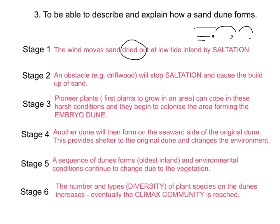Stage two: an obstacle such as driftwood, a can, or a rock stops saltation, causing materials to build up into a small mound of sand. Stage three: pioneer plants — the first plants to grow in any area — begin to colonise. They cope with harsh conditions: salty, windy, and with very little water. These hardy pioneer plants form what is called the embryo dune — the baby dune, the first dune in the sequence.